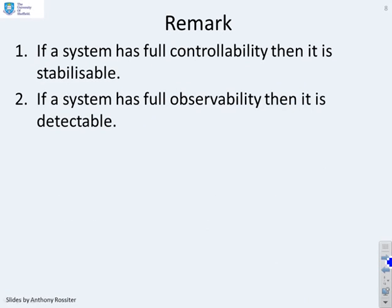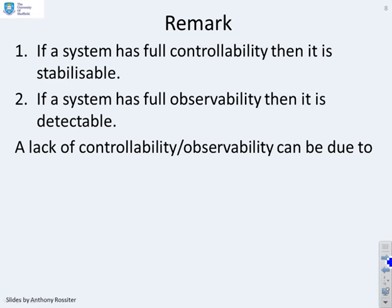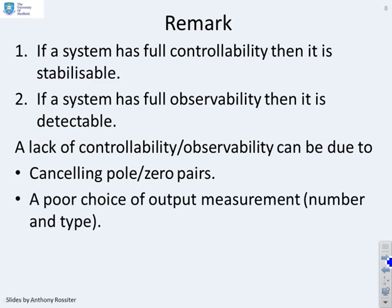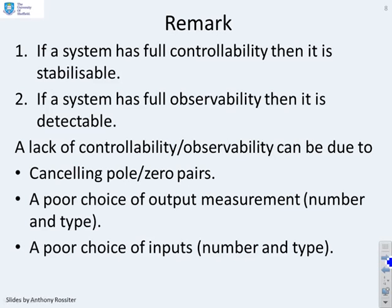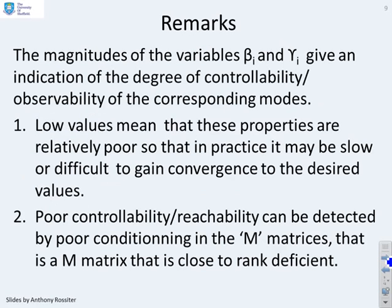If a system has full controllability, it must be stabilizable. Similarly, if a system has full observability, it must be detectable. A lack of controllability and observability can be due to a number of things — most typically cancelling pole-zero pairs, which means the state-space model is higher order than needed to represent the input-output dynamics. You could also have a poor choice of output measurement or a poor choice of inputs, in terms of both number and type.